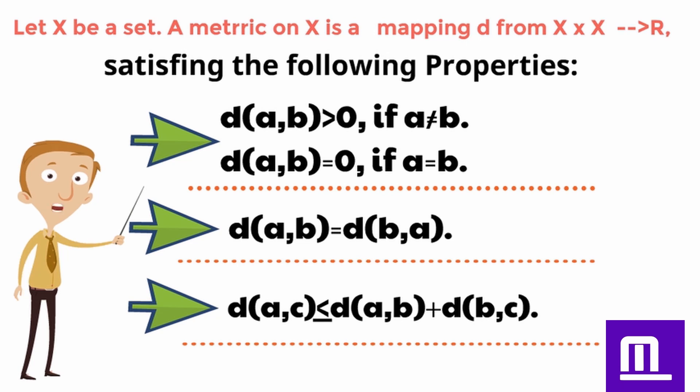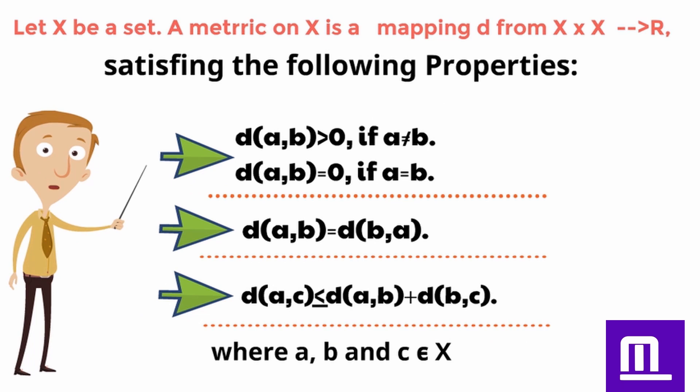3. d of a comma c is less than or equal to d of a comma b plus d of b comma c, where a, b, and c belongs to x.